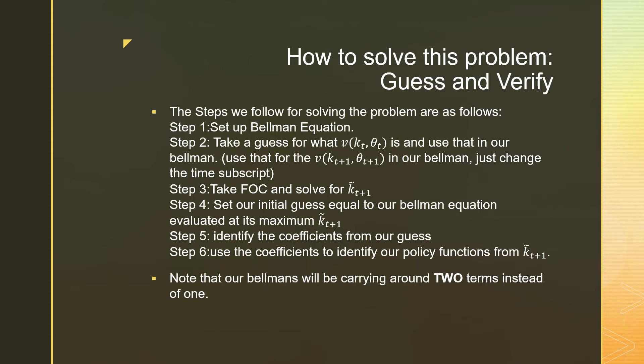In terms of solving this problem, we're going to use a guess and verify method. So the steps are as follows. We're going to set up a Bellman equation. We're going to take a guess for what our value function really is. We're going to take our first order condition and solve for KT plus 1. We're going to then set our initial guess equal to our Bellman equation, evaluated at its maximum of KT plus 1 tilde. This is our cake saving identity.